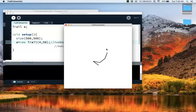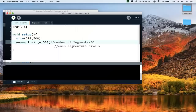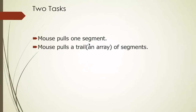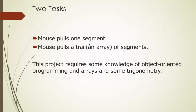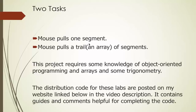We'll go through the math, which turns out to be really easy — very simple math and short code. We'll break this up into tasks: first, pulling one segment, then once that works, an array of segments. This will require some object-oriented programming, arrays knowledge, and a little trigonometry. I'll post the distribution code with comments to help you complete the code.